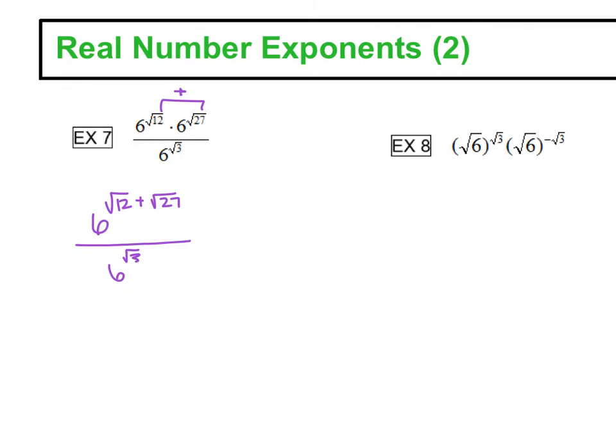All right, so let's talk about the square root of 12 plus the square root of 27. Now those are not the same number, so we can't add those together, but can we reduce the square root of 12 or the square root of 27? So yeah, square root of 12 you can break down into square root of 4 and square root of 3. Square root of 4 is 2.